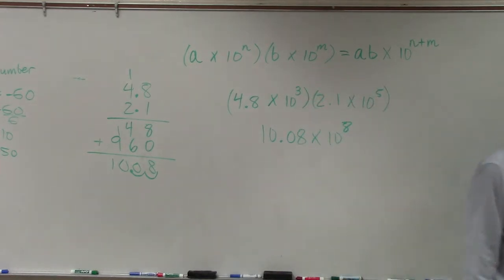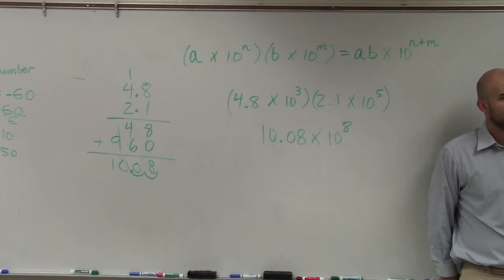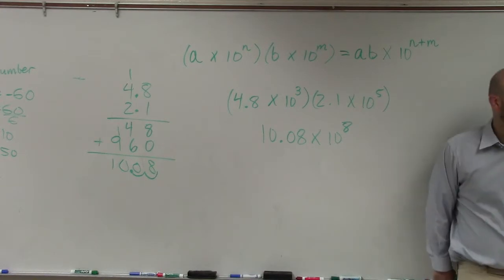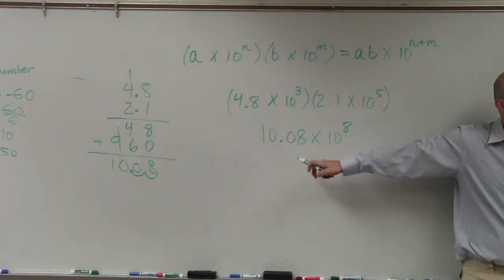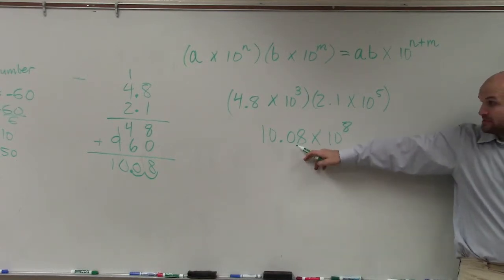Does everybody see that? Now, but here's the question. Paige, what is wrong with my answer? Because I have not finalized this. And it's right above my head is the answer. No, it's not. I erased it. What do we know about our A? A has to be between what? 1 and 10.